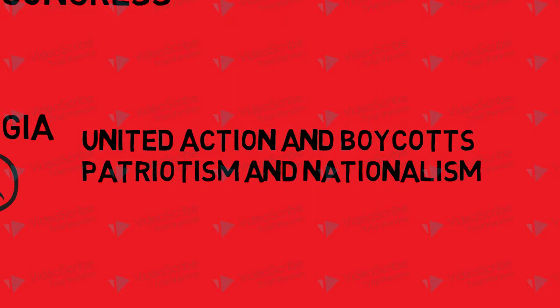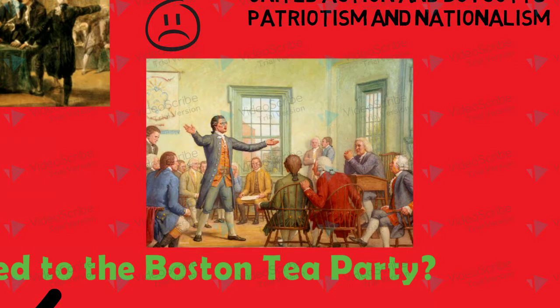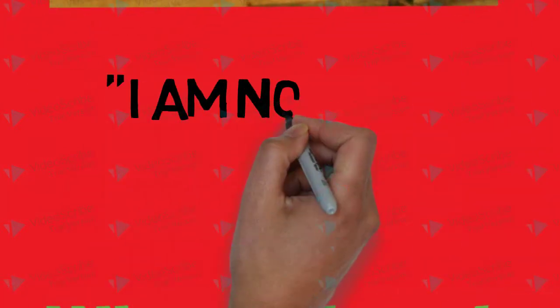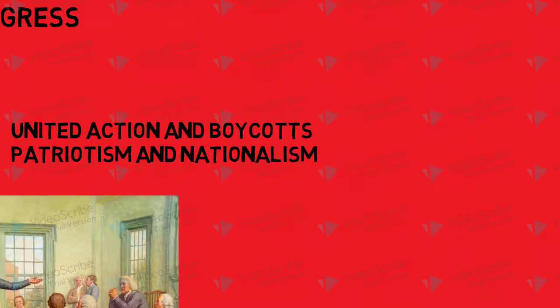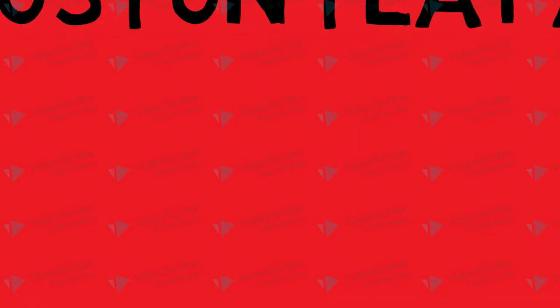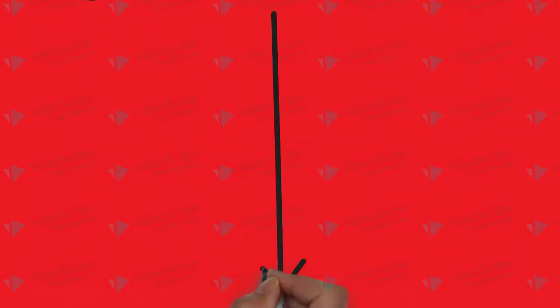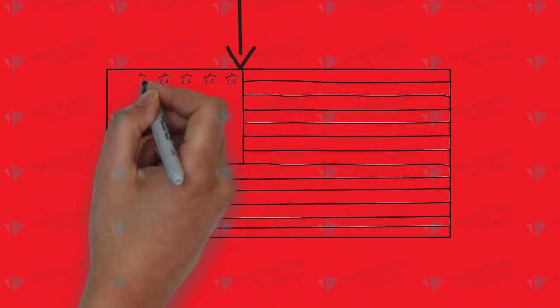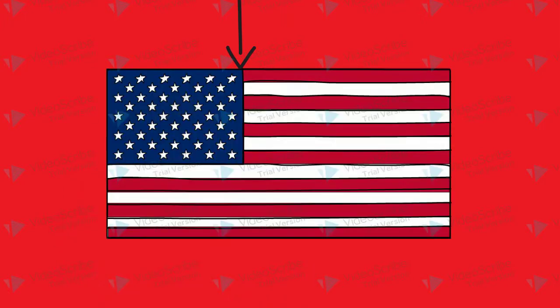This was important because it laid the foundation for America. This nationalistic feeling was captured when Patrick Henry said, 'I am not a Virginian, but an American.' So the Boston Tea Party led to the Intolerable Acts, which led to the First Continental Congress, all of which fostered unity, rose patriotism against Britain, and lit the flame of the revolution itself.